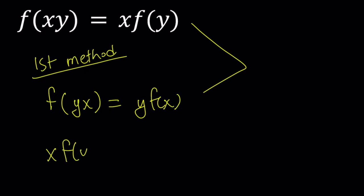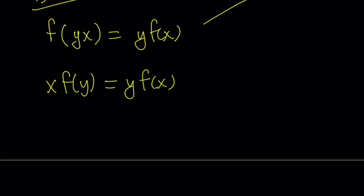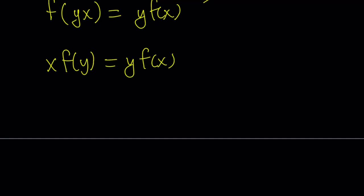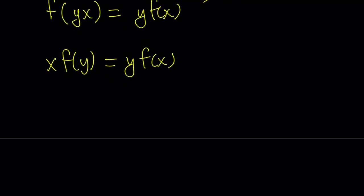X times f of y equals y times f of x. Now, you can look at this like stare at it for hours, and it may not make sense to you until you put the x's on one side and y's on the other side. Let's go ahead and do it. So I'm going to divide both sides by xy, right? Is that right? And if I divide both sides by xy, that should do some tricks.